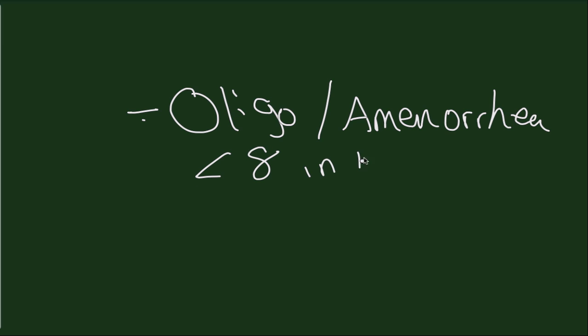The third criteria that we look at would be oligo or amenorrhea. Oligomenorrhea is lack of consistent menstruations or not regular menstrual cycles, and typically it's less than 8 in a 12-month time. Amenorrhea means no menstrual cycle. The reason for both of these in the PCOS syndrome is anovulation. The patient is just not ovulating an egg each month and therefore feeds back into oligo or amenorrhea.